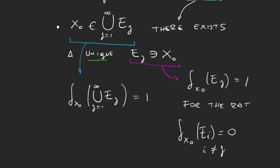So, as this is the only one that has the element x₀, its measure is 1. But all the rest don't have x₀, so their measures will be 0.